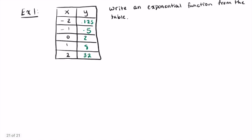So in this first example, we have this table. It goes from negative 2 to 2. And the question asks us to write an exponential function from the table. Well, right in the very beginning, they tell us that it's an exponential function. So we know it's going to be in the form of a times b to the x.